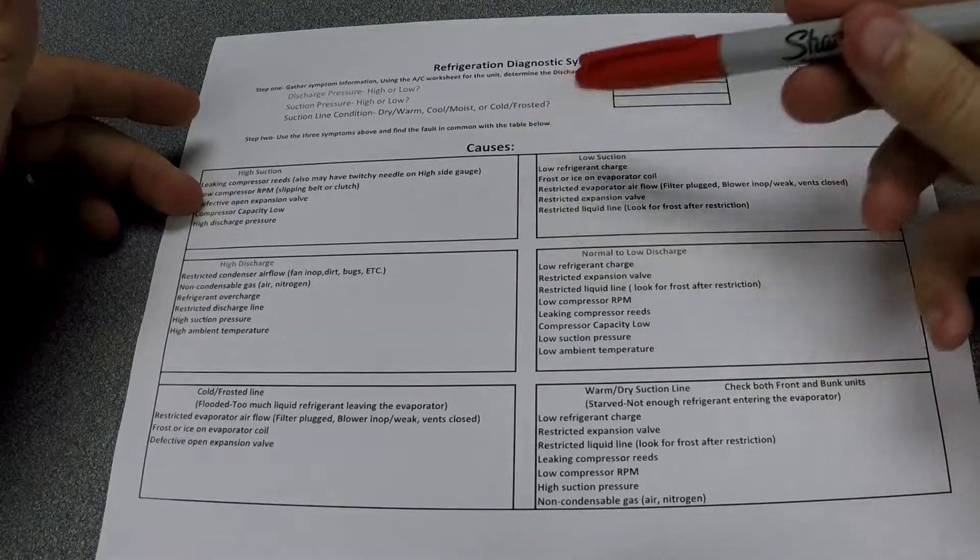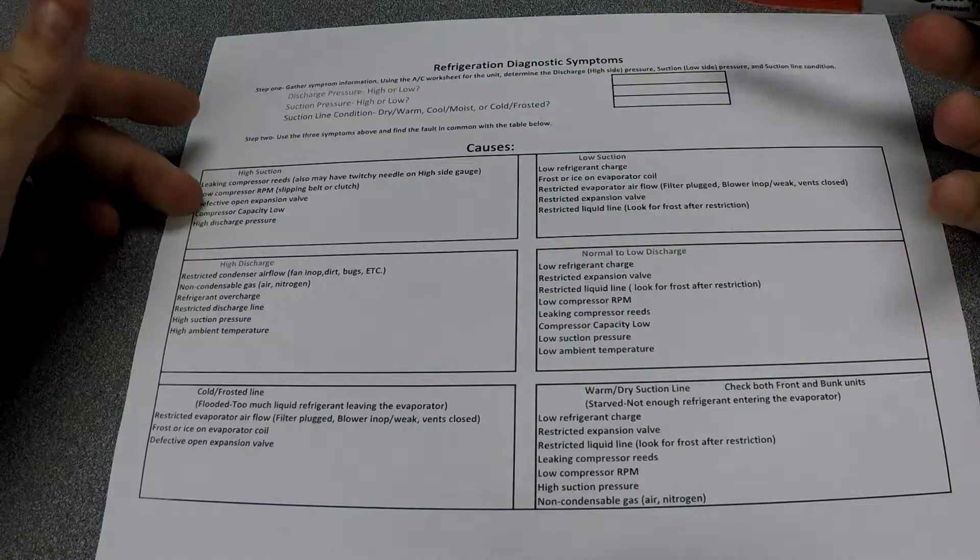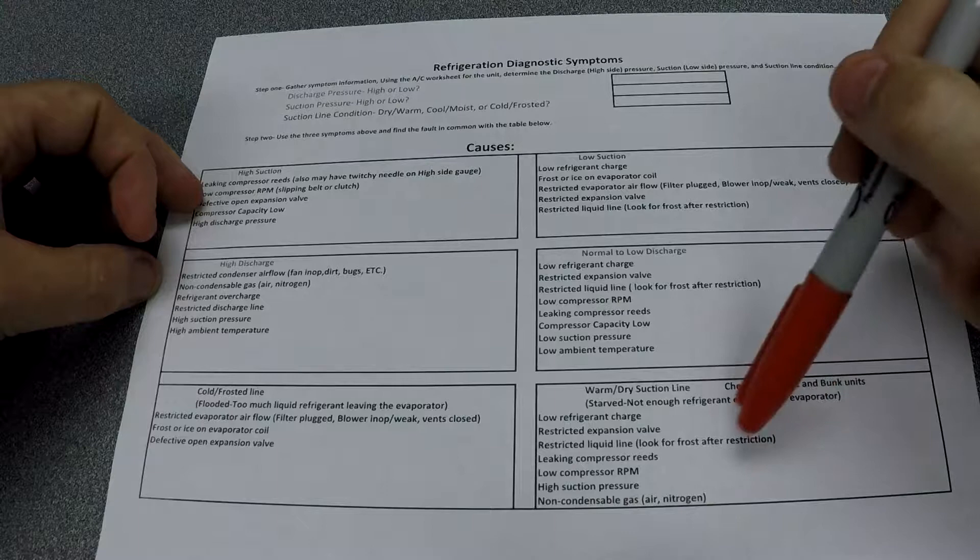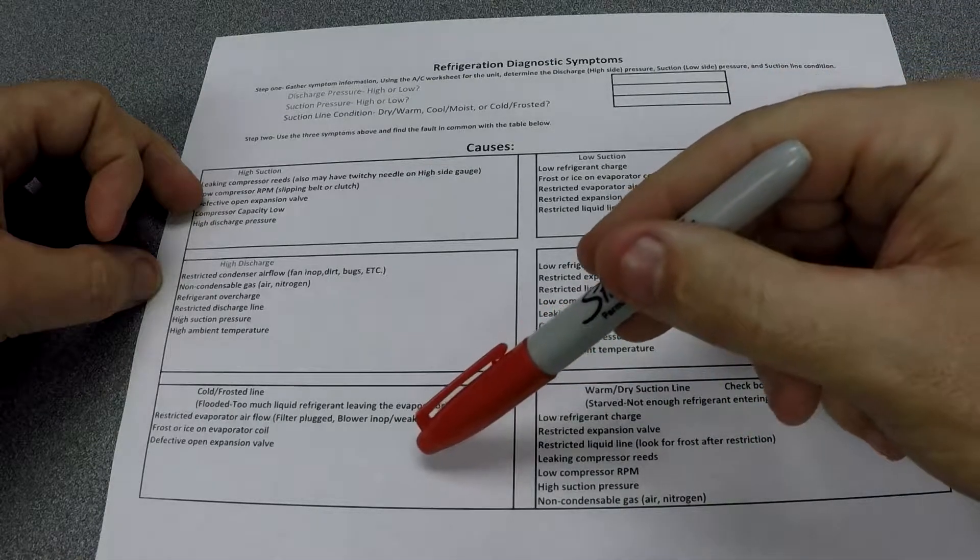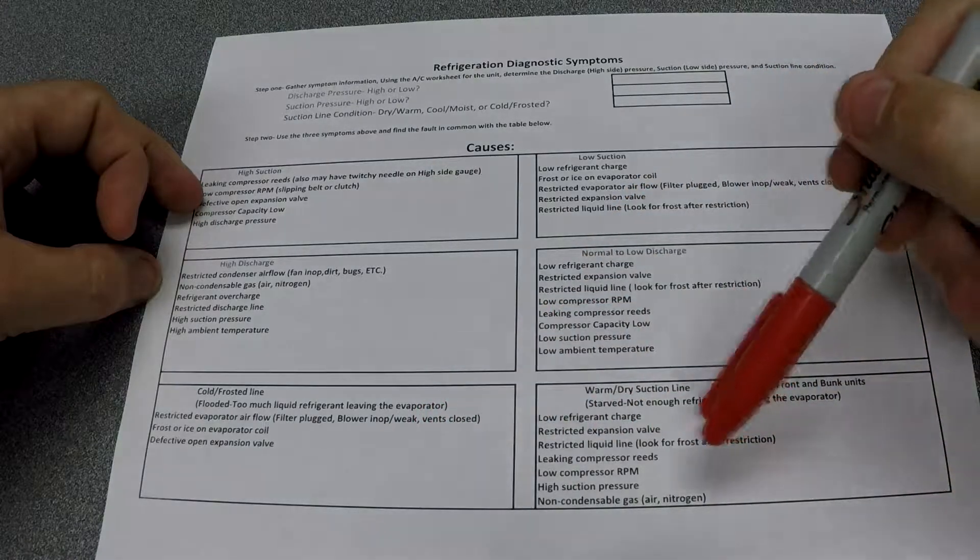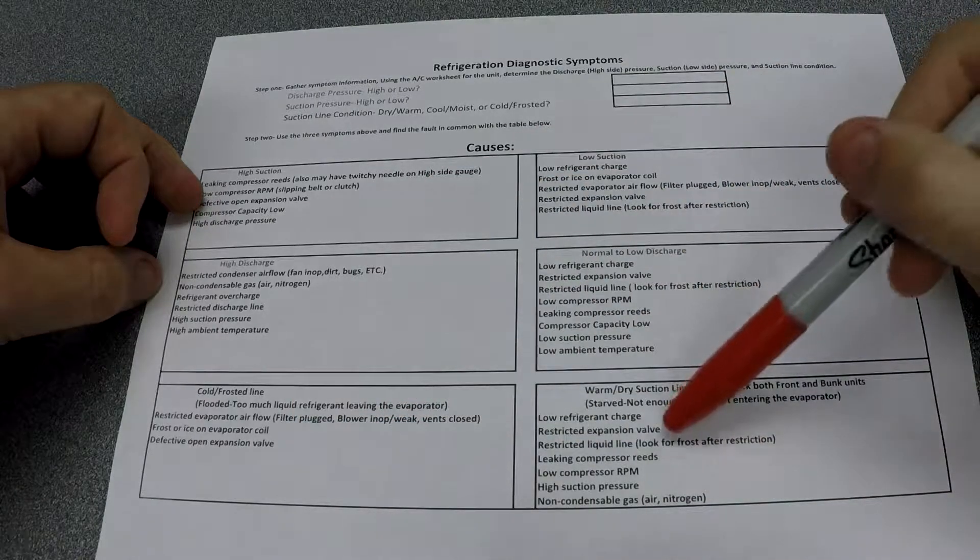That's the line between the expansion valve outlet back to the compressor. Is it cold and frosty, or is it warm and dry? The way the sheet works is these two boxes up here are suction, suction being the low side.